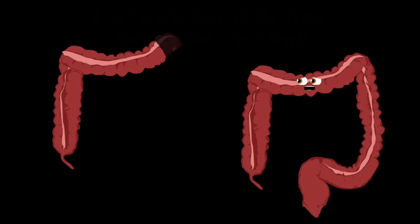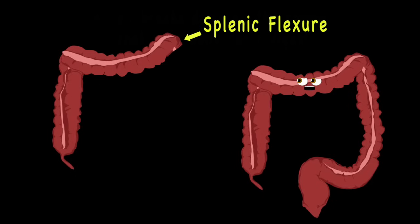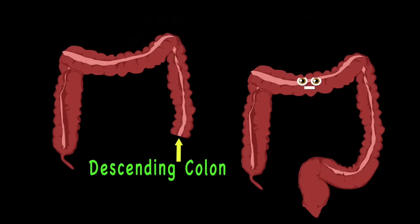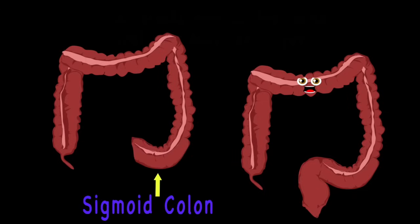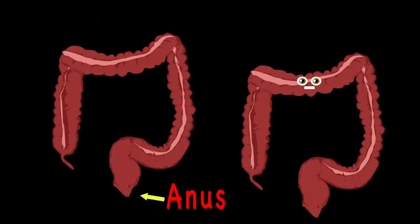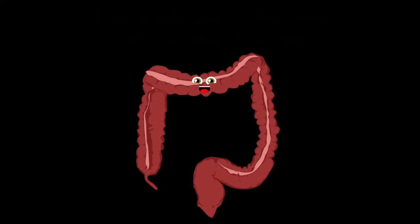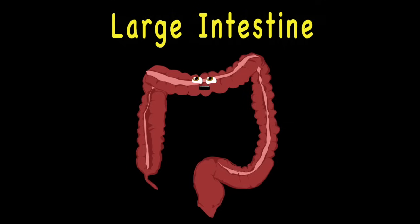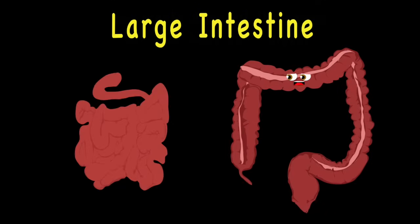Then turns at your splenic flexure, onto the descending colon. Your curved-shaped sigmoid colon leads to your rectum, which is where your fecal matter meets your anus in your bum. I am your large intestine, though I'm shorter than your small.